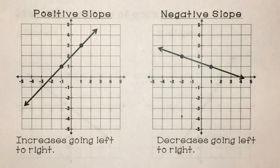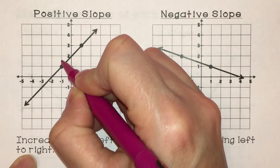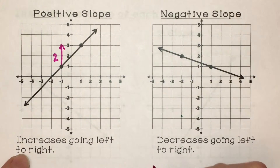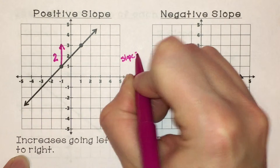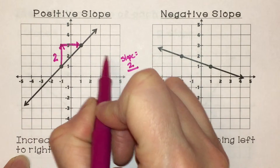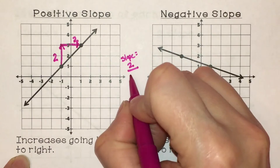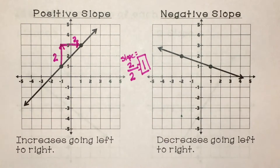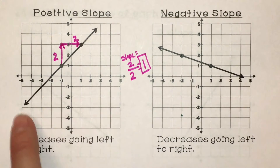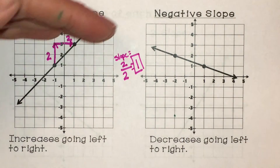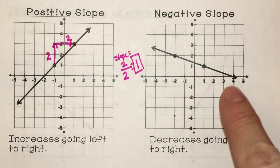I can double check myself using rise over run. Starting at my bottom point, I rise up until I'm parallel with my other point — going up is positive, so positive two. Then I run over to my other point: going right is positive, and I ran one, two. So two over two equals positive one. My slope is positive. You can always double check: if it's increasing, the slope should be positive. This other line is going down or decreasing from left to right, so I know that slope has to be negative.